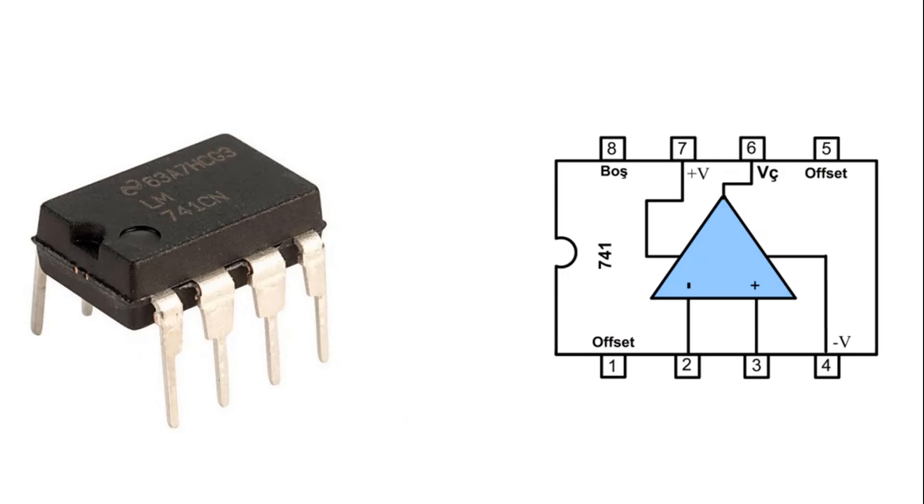As seen here, the LM741 operational amplifier is found in an eight-pin plastic case. When we look at the internal structure, pin 2 is the inverting input, pin 3 is the non-inverting input, and pin 6 is the output.